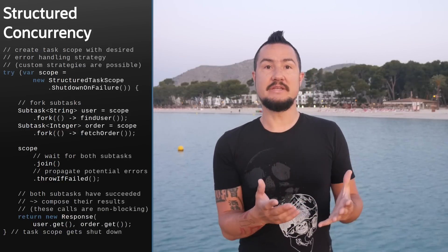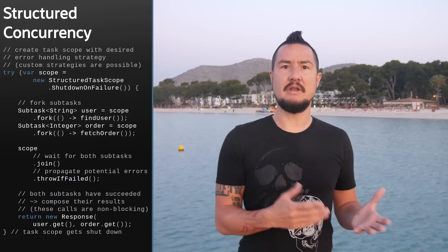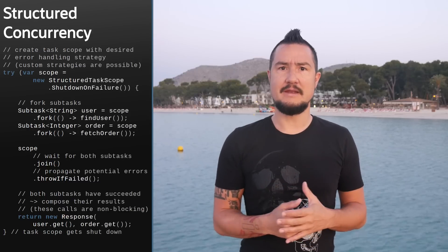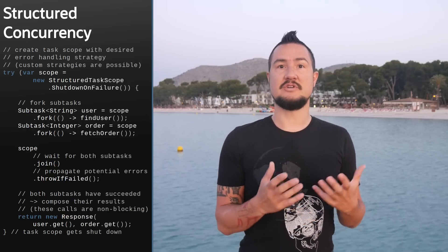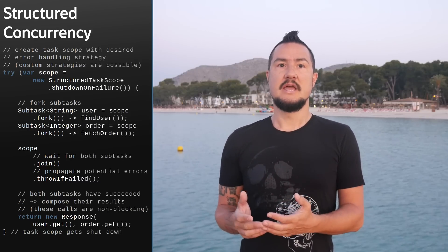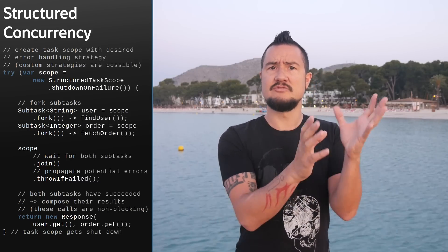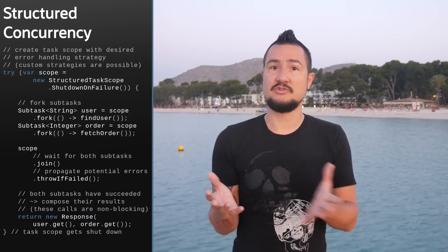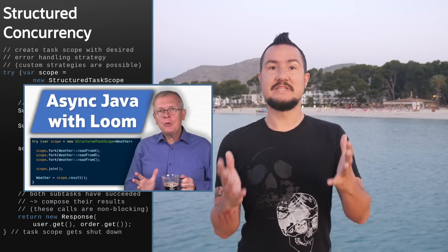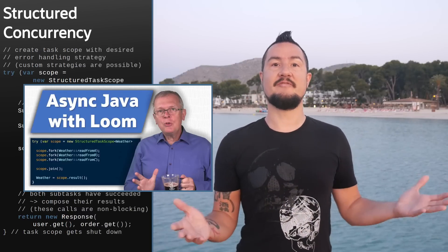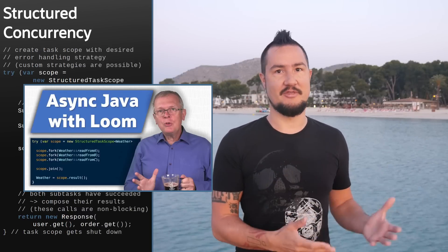In JDK 20, it returned a Future, but that offered degrees of freedom — like calling the blocking get() method — that are counterproductive in Structured Concurrency, and was overall too evocative of asynchronous programming, which is exactly what Structured Concurrency isn't. José had a great JEPCafé episode on all this. Check out episode number 13.